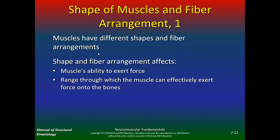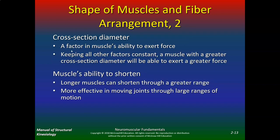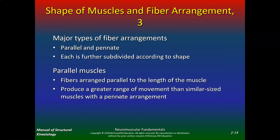Muscles have different shapes and fiber arrangements. Shape and fiber arrangement affects a muscle's ability to exert force, the range through which it can effectively exert force onto the bones, and the cross-section diameter — a factor in the muscle's ability to exert force. Keeping all other factors constant, a muscle with a greater cross-section diameter will be able to exert a greater force. Longer muscles can shorten through a greater range and are more effective in moving joints through large ranges of motion.